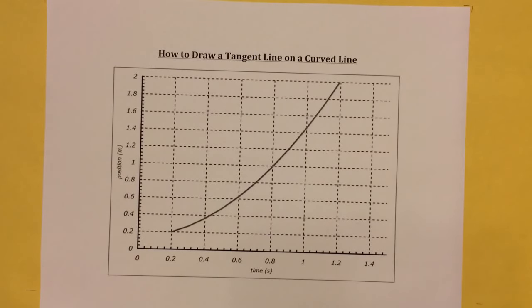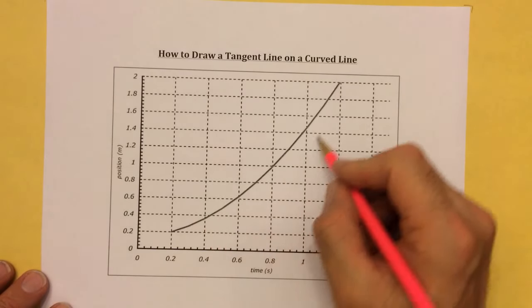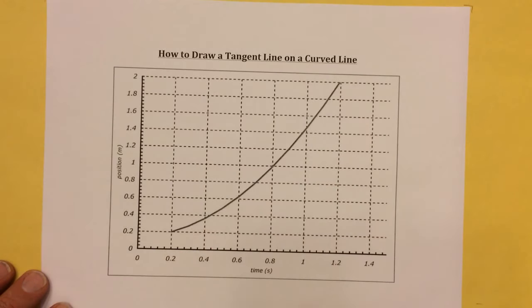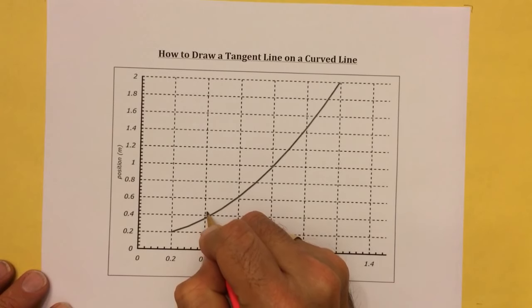A tangent line is a straight line that touches a curve at a single data point. So let's pick a single data point somewhere along this curve. I'm going to pick it randomly. Let's pick this one right here. I'm going to circle it right there.